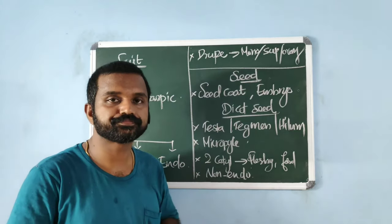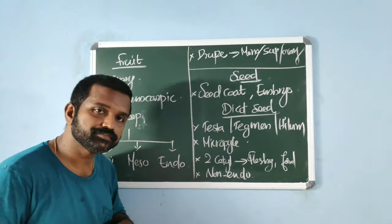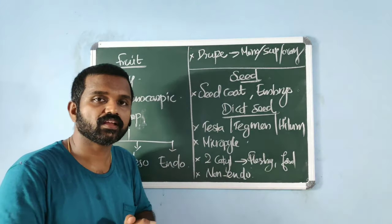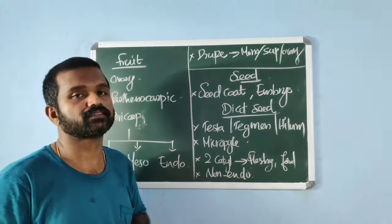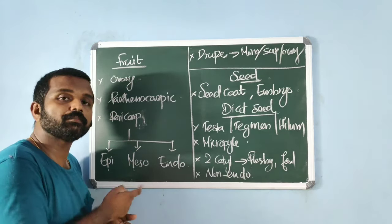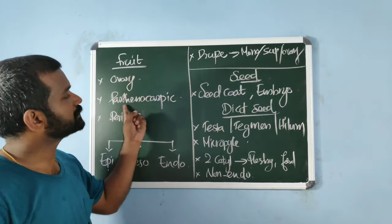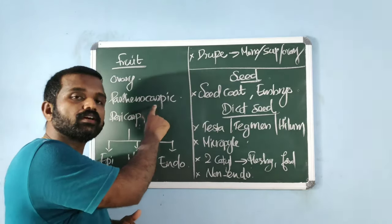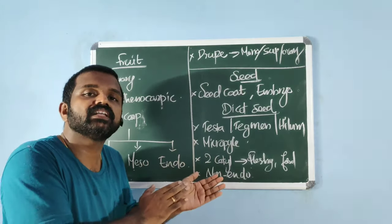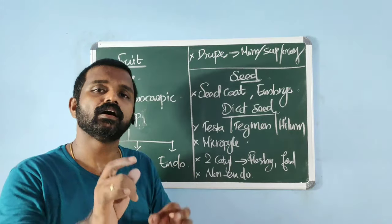A fruit is a mature or ripened ovary. The fruit wall is technically termed the pericarp, which can be either dry or fleshy. If it is fleshy and thick, it has three layers: outer epicarp, middle mesocarp, and inner endocarp. Parthenocarpic fruit — partheno means virgin, carp means fruit — is a fruit developed from an unfertilized ovary; parthenocarpic fruits are usually seedless. A typical example is banana.